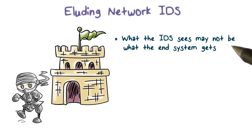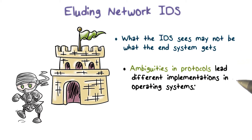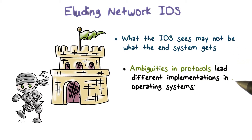The reason that the IDS and the end host are seeing different traffic is because they're using two different operating systems that process traffic in different ways. In particular, TCP/IP protocol specifications have ambiguities that lead to different implementations in different operating systems.